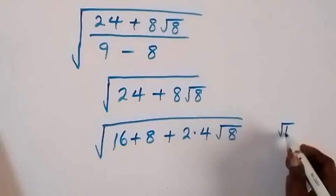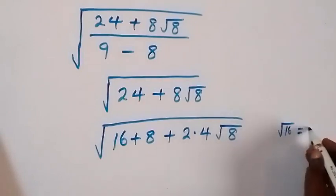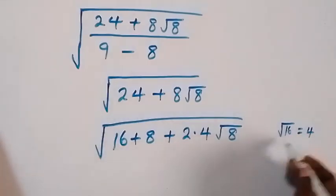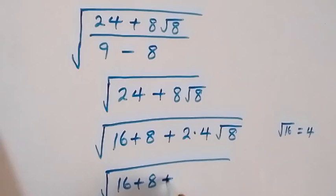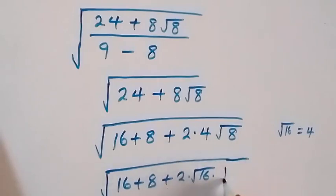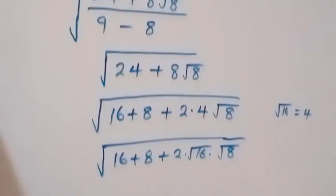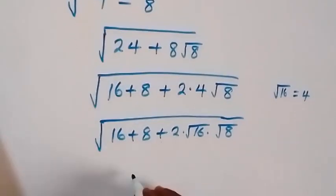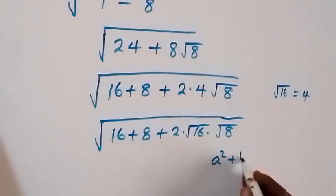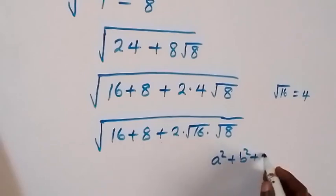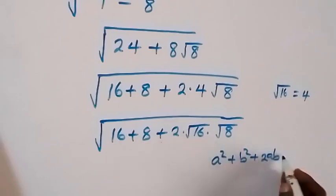So we replace 4 with root 16. Then we have the square root of 16 plus 8, then plus 2 times root 16 times root 8. This expression inside can now be matched to a recognizable algebraic pattern.